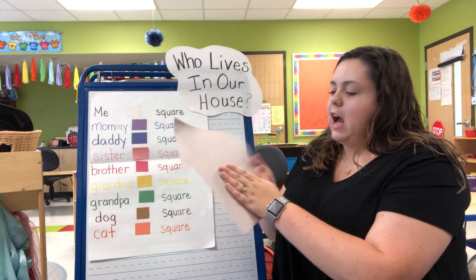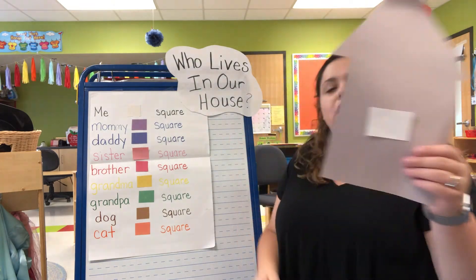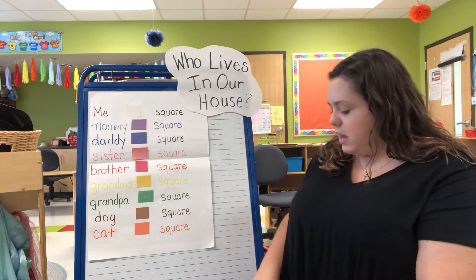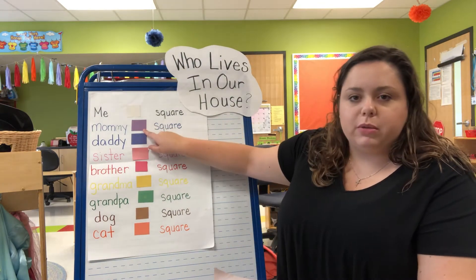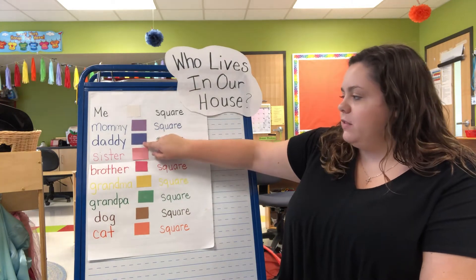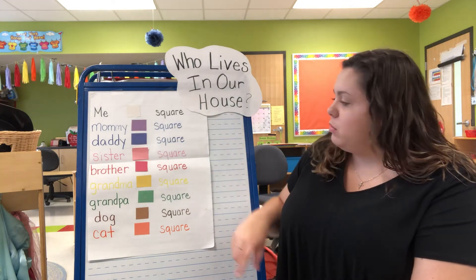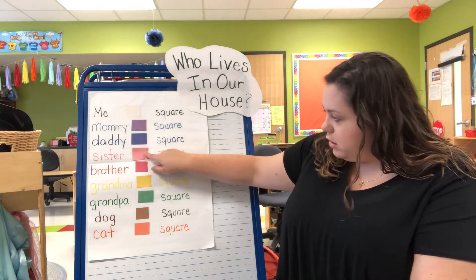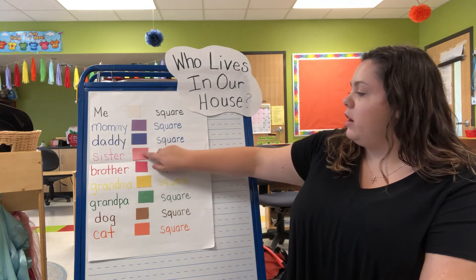I'm going to take it and put me right in the middle, because I like to be right in the middle. There's me in my house! Now, if you live with your mommy, you can put a purple square. If your daddy lives in your house, you can put a blue square.